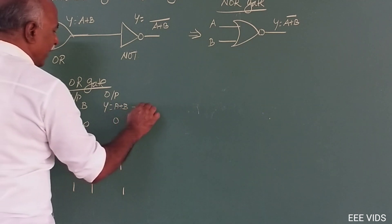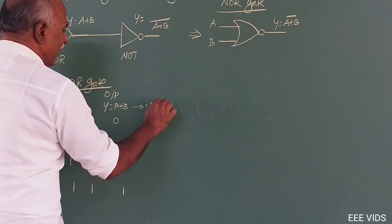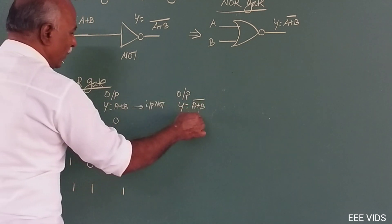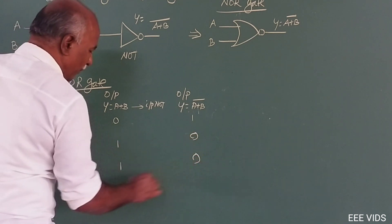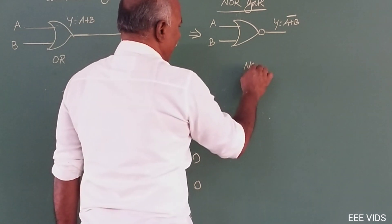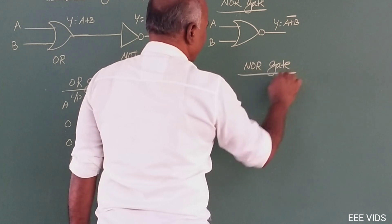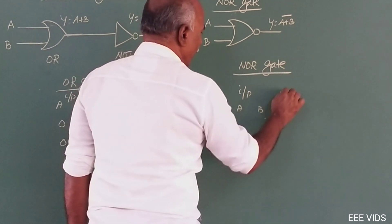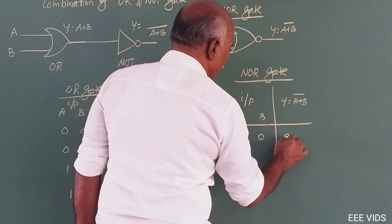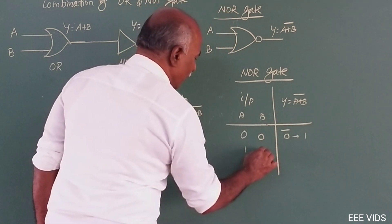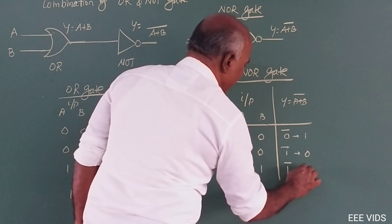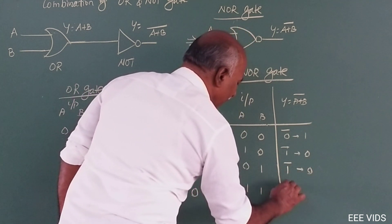Now, taking the OR gate output as input to the NOT gate. Input of NOT gate is a plus b. Output of NOT gate is a plus b complement. So: 0,0 → 0 plus 0 = 0, complement is 1; 0,1 → 0 plus 1 = 1, complement is 0; 1,0 → 1 plus 0 = 1, complement is 0; 1,1 → 1 plus 1 = 1, complement is 0. This is the NOR gate truth table.